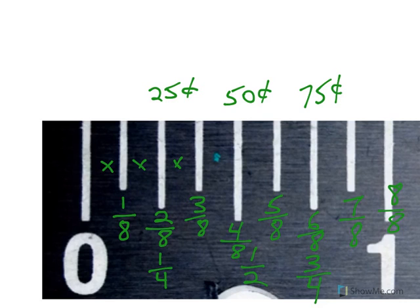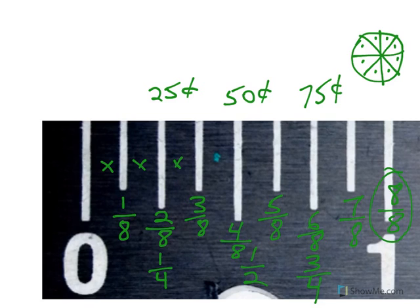So if you have eight eighths of a pie. I'm drawing a pie now and I divide it into one, two, three, four, five, six, seven, eight. If you had eight eighths of a pie, you'd have a whole pie. Just like here, eight eighths gives you a whole inch. Four eighths, of course, gives you a half a pie.